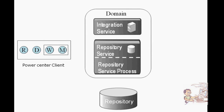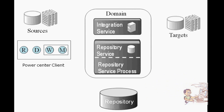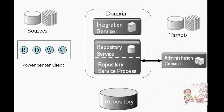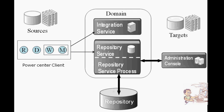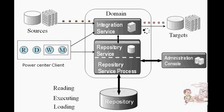This is the administration part: repository, integration service, repository database, and sources and targets. First, metadata is stored in the database, then an execution request is sent to the integration service, then from the integration service to the repository database. From there, we get instructions, read the sources, execute, and load the data.